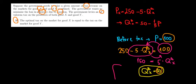He wants to minimize the loss in efficiency due to taxation. There's going to be an ad valorem tax on producers of good X and good Y. So the optimal tax on the market for good X is equal to the tax on the market for good Y. Is that true or false?